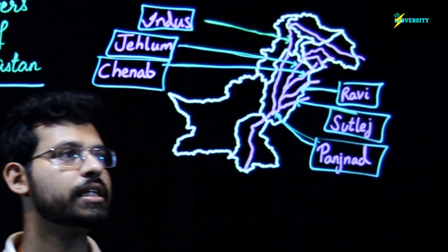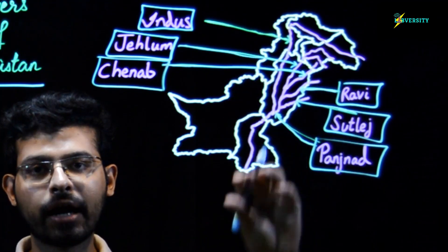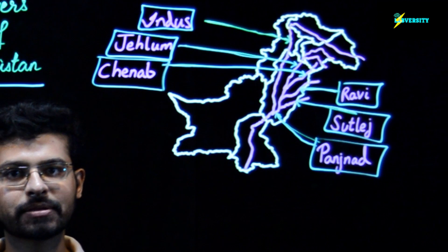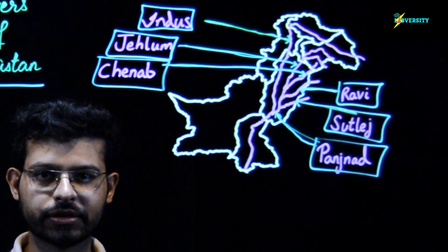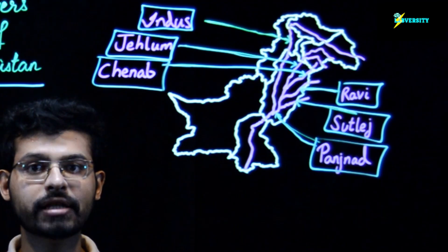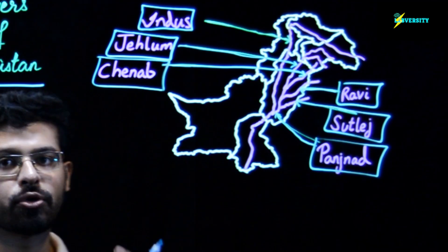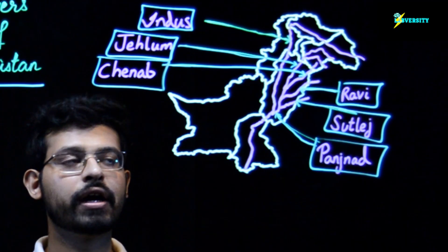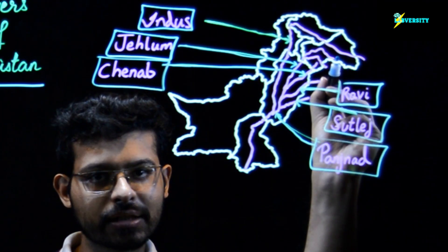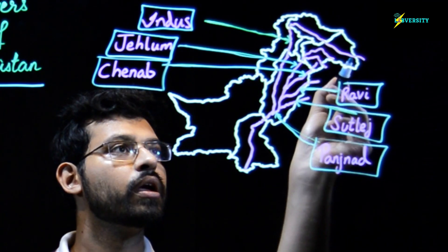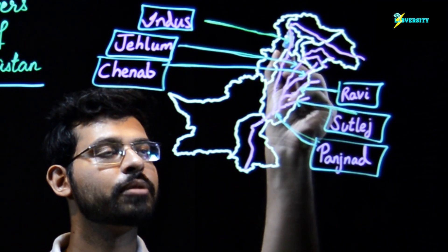On this map we can see the route that the Indus is taking, and on its way it is being joined by different rivers which we call the tributaries of River Indus. At this point River Indus is entering into Pakistan, flowing through the Kashmir region.